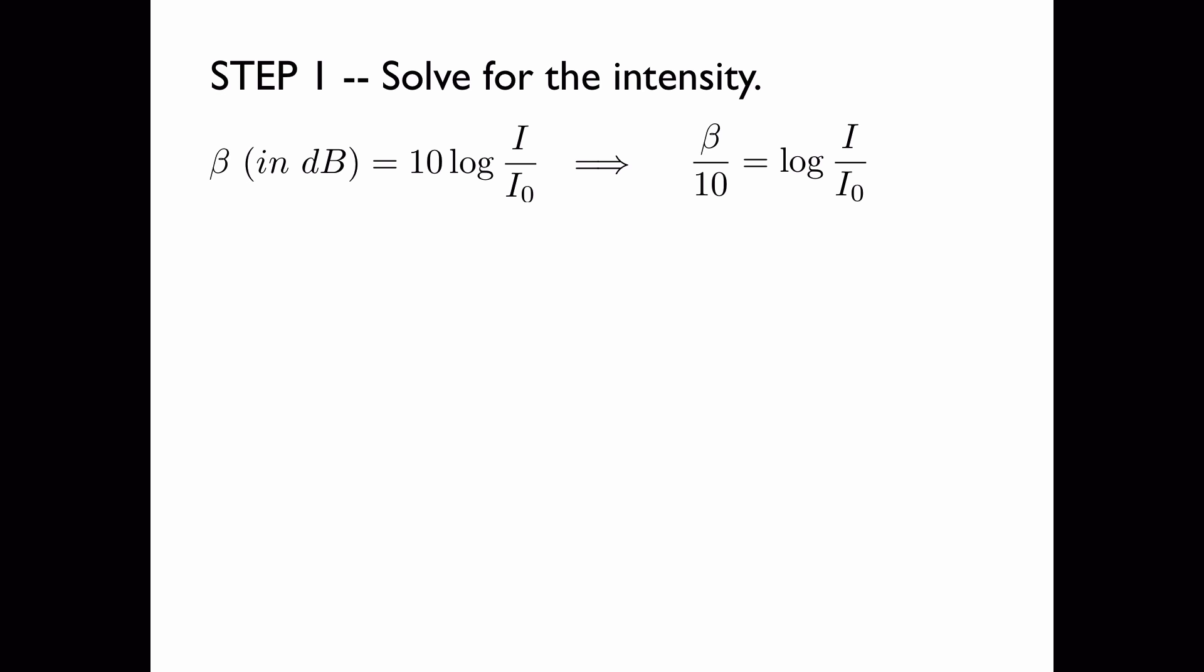First, we'll divide both sides by 10. And now, to get rid of the logarithm, we have to take both sides and make them the exponent of 10. This implies that on the left side, we have 10 to the beta over 10, and on the right side, we just have I over the reference intensity, I sub 0. Now we can multiply both sides by I sub 0, and we have an equation for the intensity.